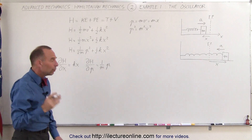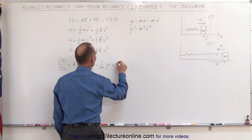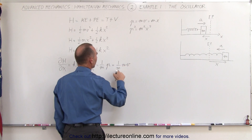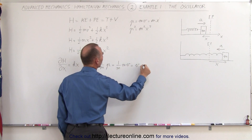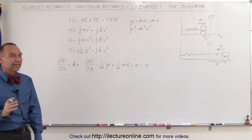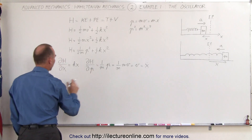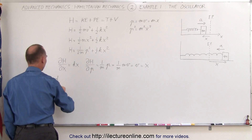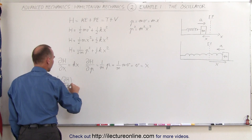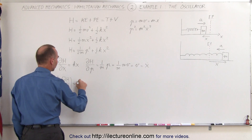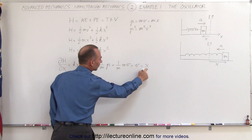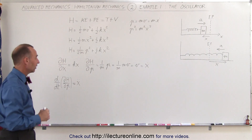Now 1 over m times p can be rewritten as 1 over m times mv. Notice that the m's cancel out, which is equal to v, which is equal to ẋ. We're then going to take the derivative with respect to time of this component, so the derivative with respect to time of the partial of H with respect to p is equal to ẍ — simply the derivative of ẋ with respect to time, which is ẍ, meaning acceleration.